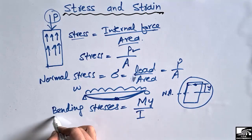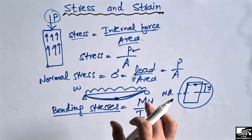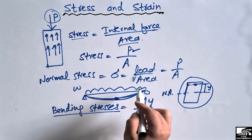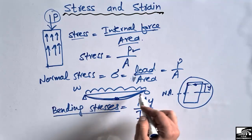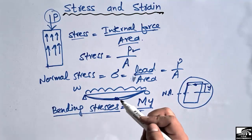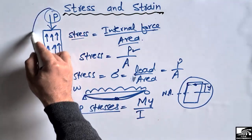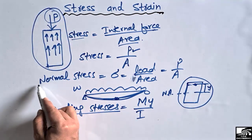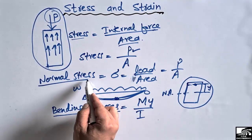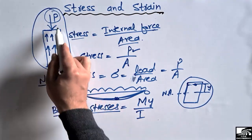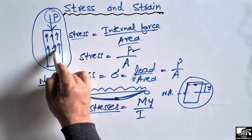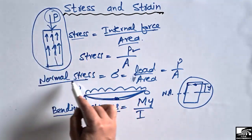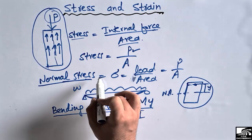This formula is used to find bending stresses. Bending stresses are mostly encountered in beams because beams tend to bend due to applied loads. In the case of columns, we mostly have normal or axial stresses, because the load acts along the axis of the column.